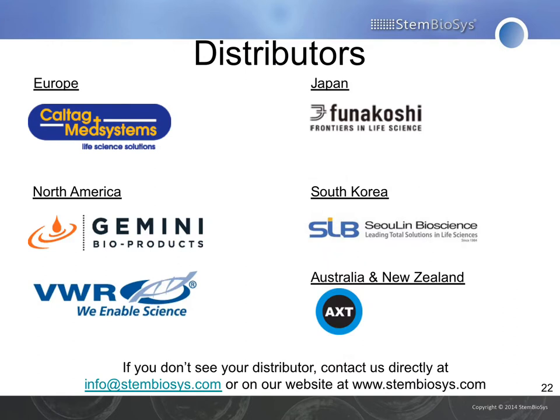Lastly, I'd like to thank our distributors: CalTag Med Systems in Europe, Gemini Bioproducts and BWR in North America, Funakoshi in Japan, Solin Biosciences in South Korea, and AXT in Australia and New Zealand. If you don't see your distributor here, you can check our distributor page at www.stembiosis.com, which is also a great source of information on our products, or you can email us directly at info@stembiosis.com. Thank you again for your time and let us know if you have any questions about cell-derived matrices.